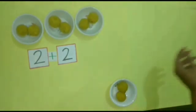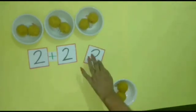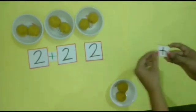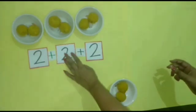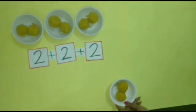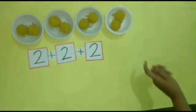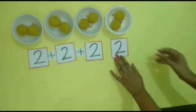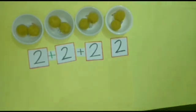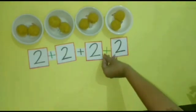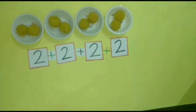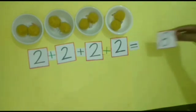The third child also bought two laddus. Now four plus two — six laddus. The fourth child also bought two laddus. So, six plus two — how many laddus? Yes, eight laddus.